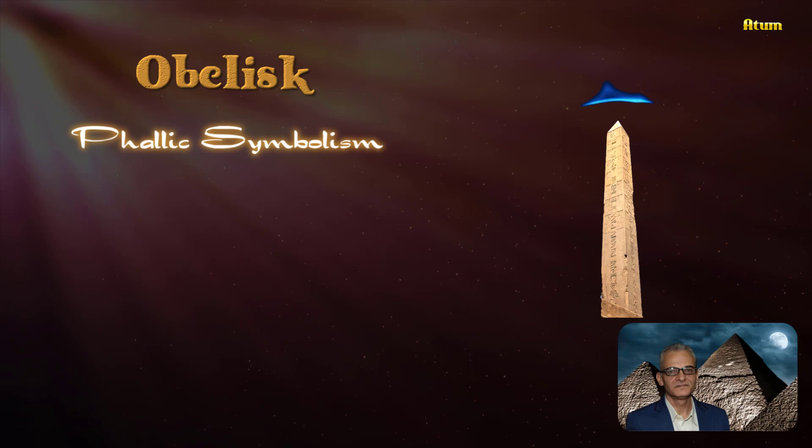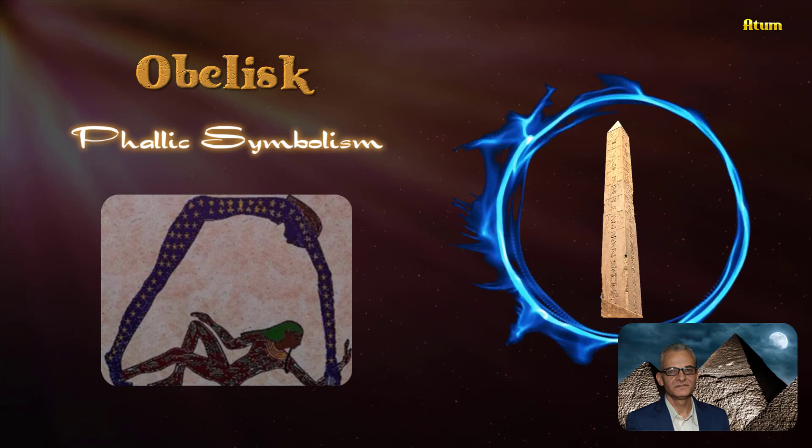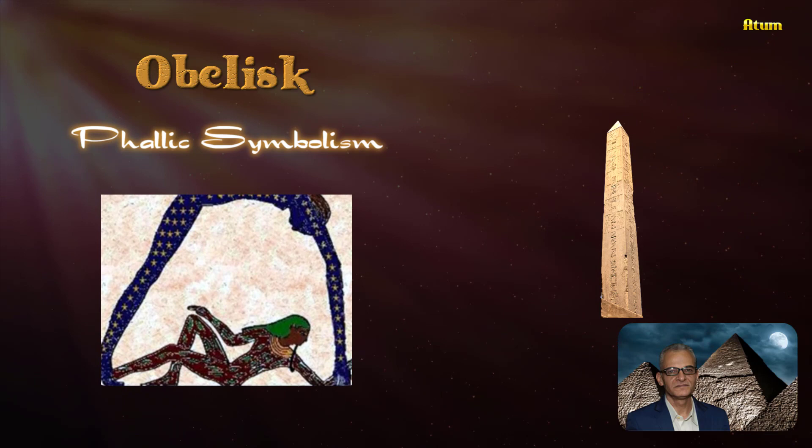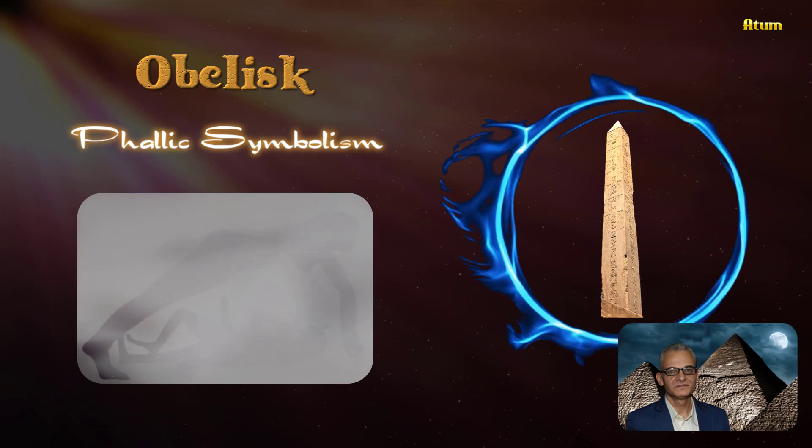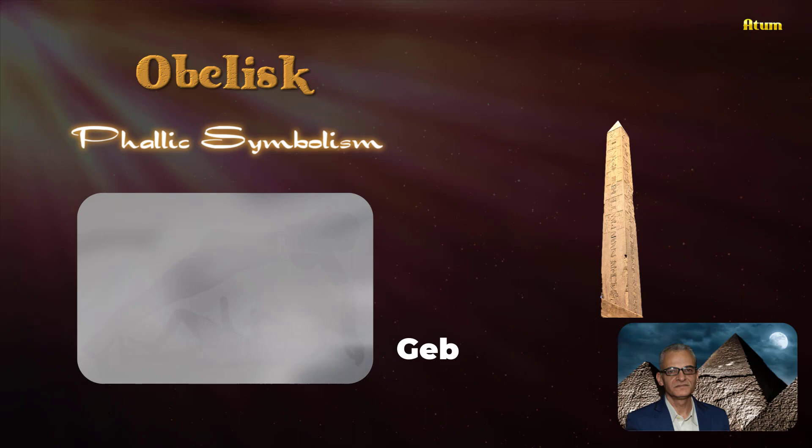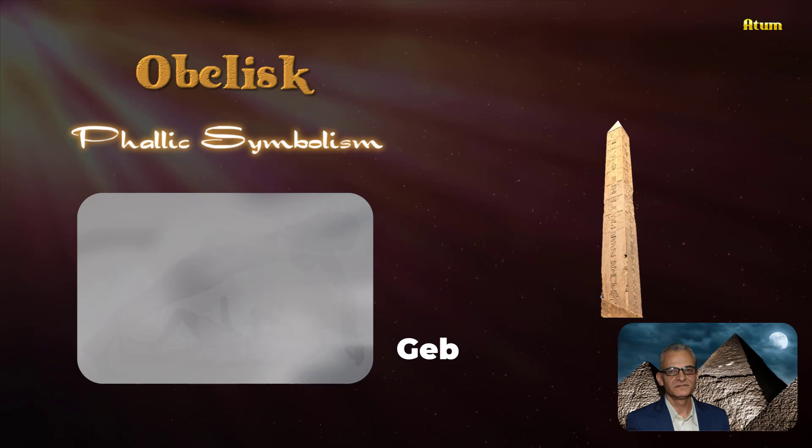Phallic symbolism was quite common in ancient times and was often depicted in architecture. The obelisk is often considered to be such a phallic symbol, signifying the masculinity of the earth. The obelisk here symbolically represents Geb, the male god of earth, who sexually contacts with Nut, the female goddess of the sky. Hence, life goes on.